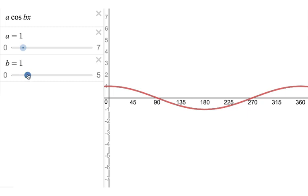Let's move b up to 2. We've now got cosine of 2x and you'll notice that instead of one complete cycle, we've now got 2 complete cycles from 0 up to 360.